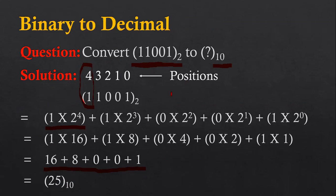The final result is 25 with base 10. So the binary number 11001 has a decimal equivalent of 25. I hope you have understood how we identify the positions of the digits and their positional values, how we multiply those digits with the position values along with the base, and how we add the multiplication results to find the final answer.